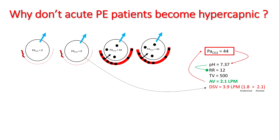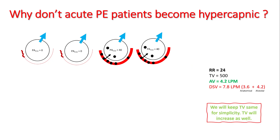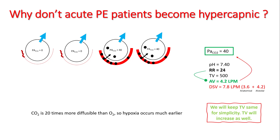This drop in alveolar ventilation has caused PaCO2 to increase, and that's going to lower your pH. Lower pH is a stimulator for minute ventilation, so we'll increase the respiratory rate — and understand that both respiratory rate and tidal volume will increase. Now with a respiratory rate of 24, you are back to an alveolar ventilation of 4.2, which should bring PaCO2 back down to 40.